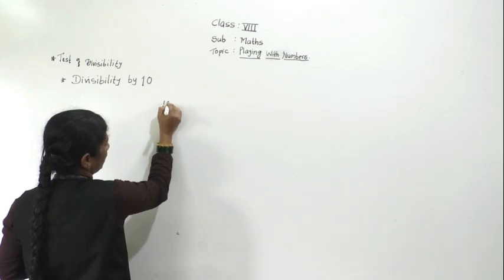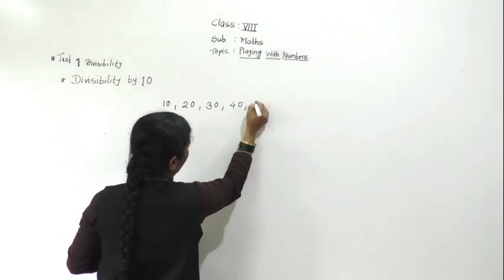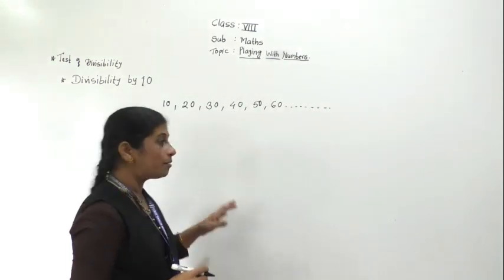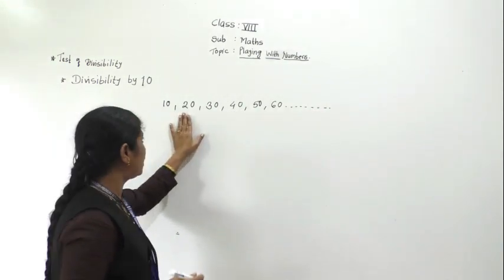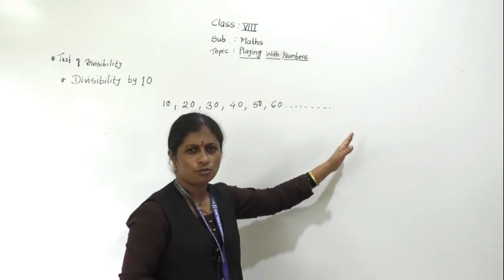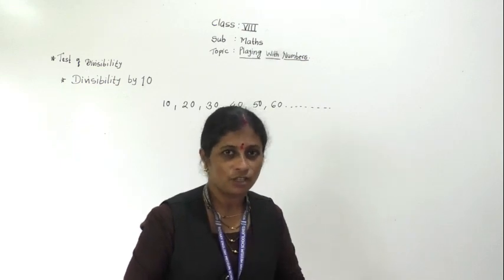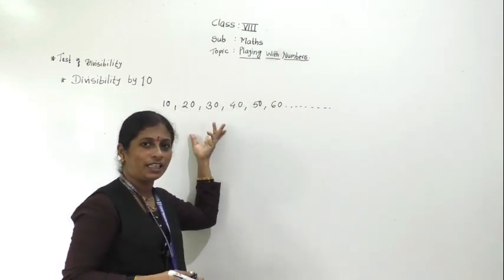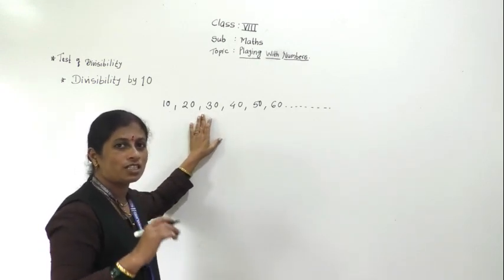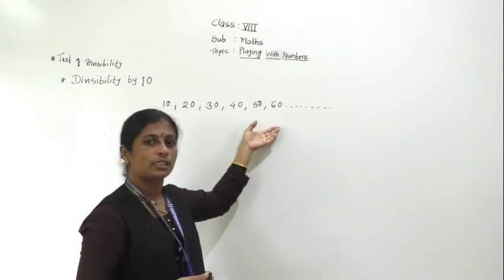Numbers like 10, 20, 30, 40, 50, and so on are all multiples of 10 — 10 ones are 10, 10 twos are 20, 10 threes are 30, and so on. Whether they are 2-digit, 3-digit, or 4-digit numbers, all these multiples of 10 are completely divisible by 10. So if the unit place digit is 0 — only and only 0 — then that number is divisible by 10, and it follows the test of divisibility by 10.